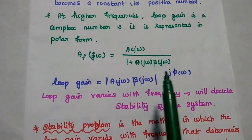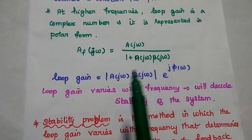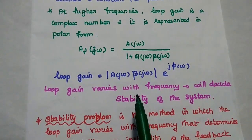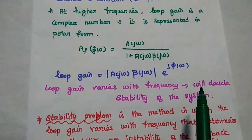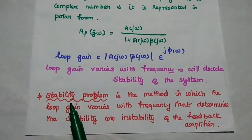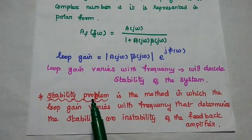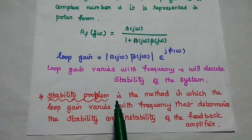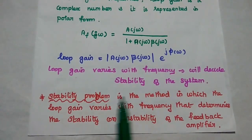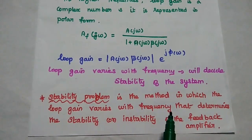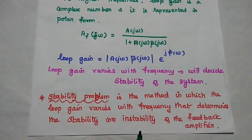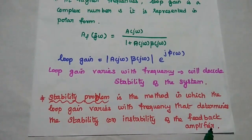The loop gain can be represented as a magnitude value along with a phase. The loop gain varies with frequency, which determines the stability of the system. Stability analysis of the feedback amplifier is the method by which the variation of loop gain with frequency determines the stability or instability of the feedback amplifier.